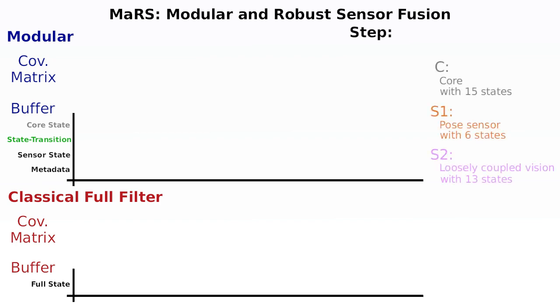We are using two sensors. Sensor 1 is a pose sensor that introduces six additional states, and Sensor 2 is a loosely coupled vision sensor that introduces 13 additional states.